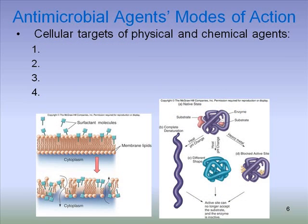Many antimicrobial agents are very specific in what part of the cell they actually target. One of the cellular targets very common among disinfecting agents is the cell wall — a structure that you don't have in eukaryotic cells. So if you have a chemical agent that targets the cell wall, it will be fairly specific for bacterial cells.